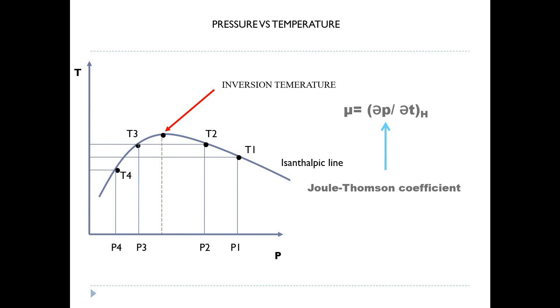Whereas, on the right-hand side of the inversion temperature, the curve has negative slope. Hence, when mu is negative, the fluid warms. This is what is Joule-Thompson effect.